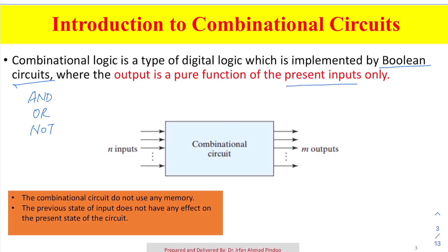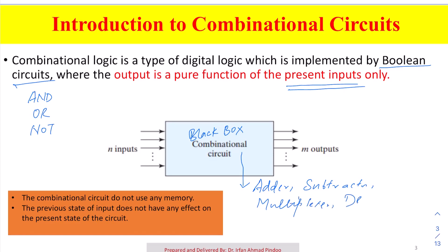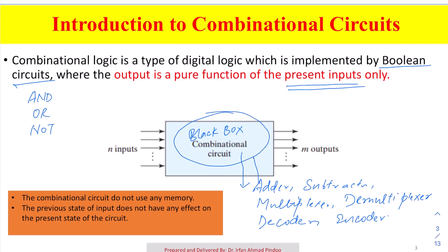The important point here is that as far as combinational circuits are concerned, whatever we are getting at the output — let this black box be any type of combinational circuit — examples include: an adder, a subtractor, a multiplexer, a demultiplexer, a decoder, an encoder, and so on. All these circuits are examples of combinational logic circuits.